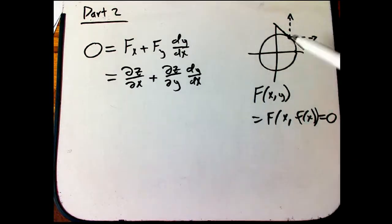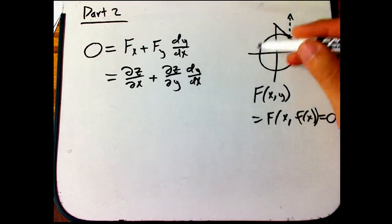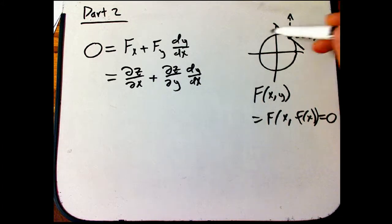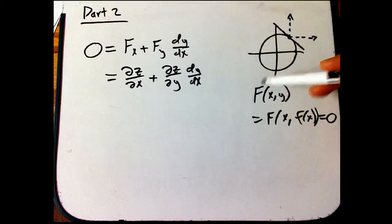So we've got this situation where we've got big F, we're thinking of our constraint set, our implicitly defined equation or curve as the level set of big F.